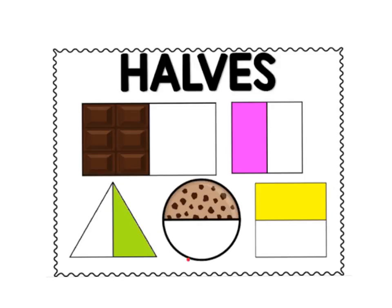Here is a circle. It has been cut into half. This is one half of the circle. And here is another square. This one has been cut going this way. Each piece is the same size. This is one half of the square.